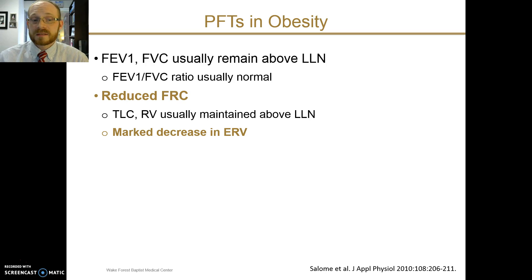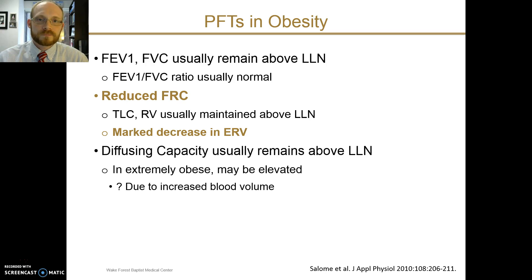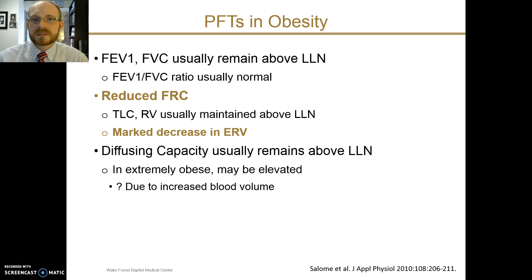Even so, total lung capacity usually is normal. Residual volume also usually remains within the normal range, but there tends to be a marked decrease in the expiratory reserve volume. Among other PFTs, diffusing capacity also typically remains normal. In the extremely obese patients, it's been noted that DLCO might actually be elevated. The exact mechanism is not well known, but it's possibly due to an increase in blood volume.